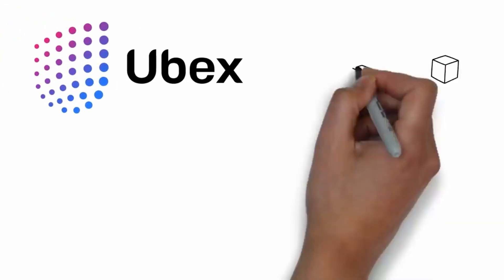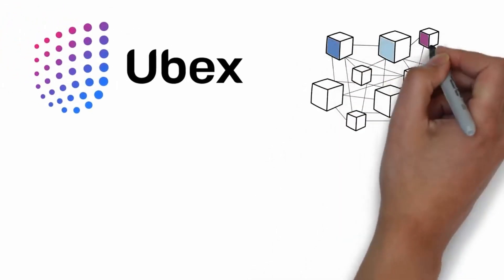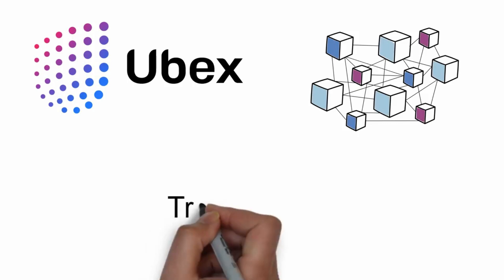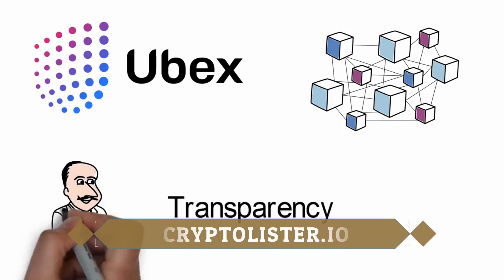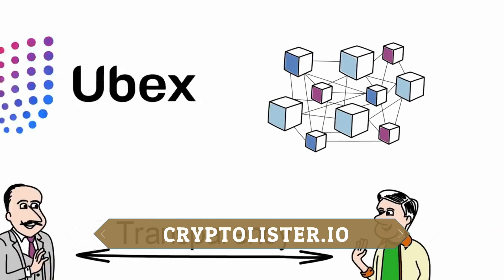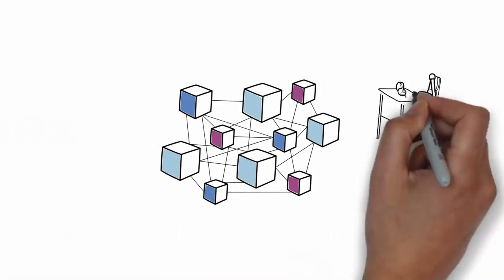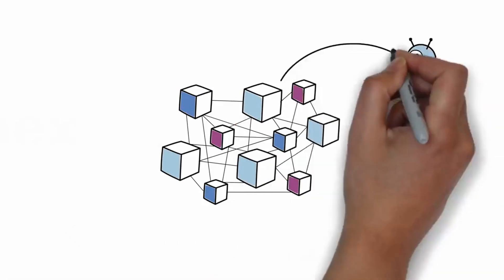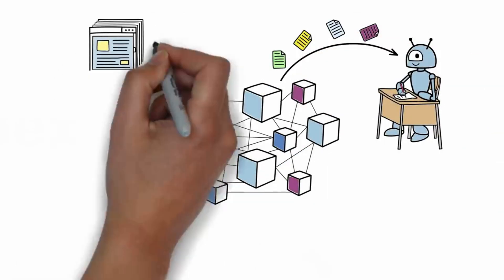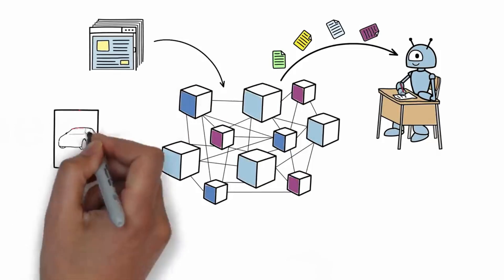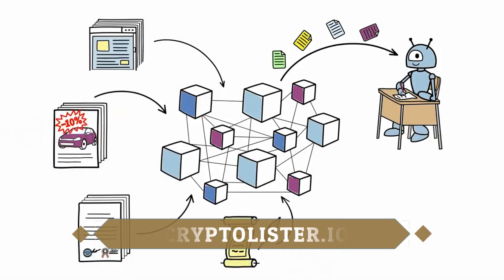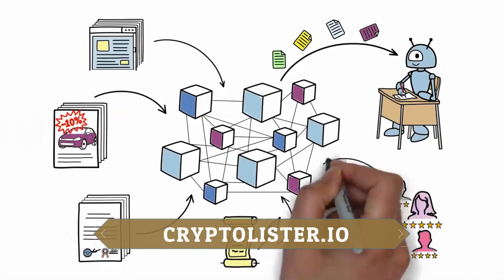Ubex operates in a distributed, decentralized environment based on blockchain technology. This ensures transparency of operations for all participants. Blockchain stores all necessary data for artificial intelligence learning, as well as information on the publisher's sites, ad content, offers, history of the participants, and their reputation.